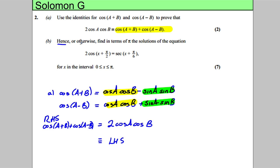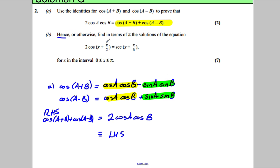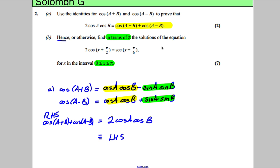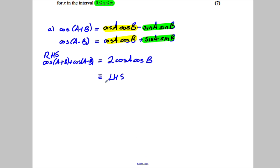Then it says hence or otherwise. I would always try and use the hence. Find in terms of pi, very important that you read the question in terms of pi, so the answers in radians and you want to leave it exact, the solutions of the following in the interval zero to pi.